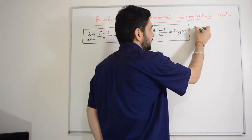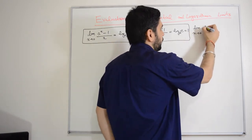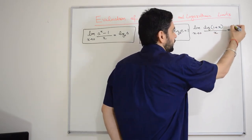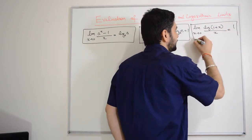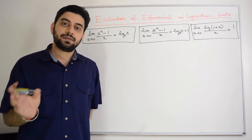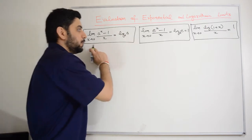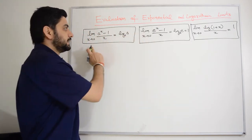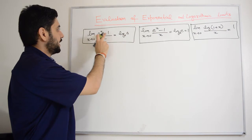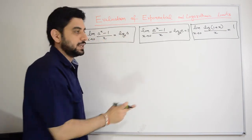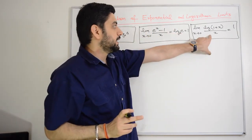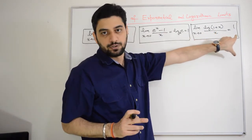The third standard result is: limit x tends to zero, log of (1 plus x) divided by x, equals 1. Remember, if you put a equal to e in the first standard result, you get this result. So remember these three results: (1) lim (aˣ-1)/x = log_e(a), (2) lim (eˣ-1)/x = 1, and (3) lim log(1+x)/x = 1.